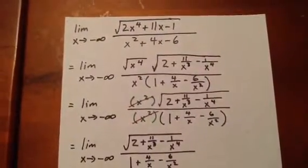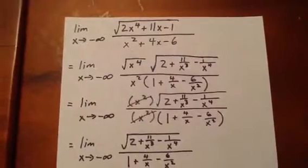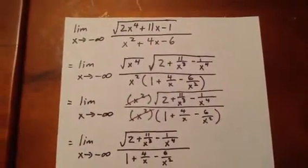In this question, we're looking for the limit as x goes to negative infinity of the square root of 2x to the 4 plus 11x minus 1 over x squared plus 4x minus 6.